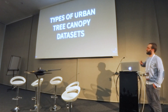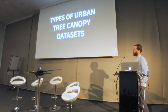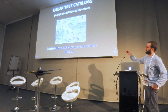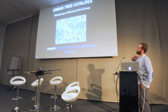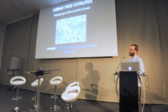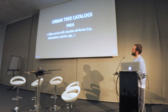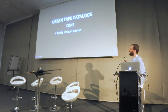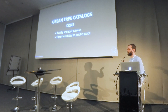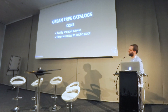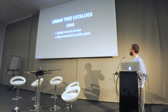I'm going to go very quickly through types of urban trees and the datasets we can find right now. First, there are catalogs, like this example of Geneva — a georeferenced list of trees with added information like species. The main pros of this kind of dataset is the detail, but the cons is that they're done by manual survey and are often restricted to public space, since surveyors won't enter a private garden.